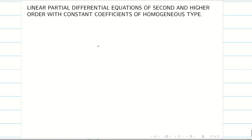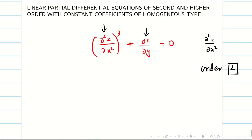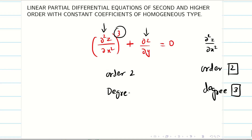Next, what is meant by degree? Consider the differential equation (∂²z/∂x²)³ + ∂z/∂y = 0. The order is 2 because the first term contains a second order derivative. Now you have to check the power raised by the highest order derivative — here the power is 3. So the degree is 3. For this differential equation, the order is 2 and the degree is 3.